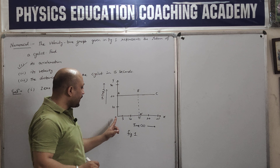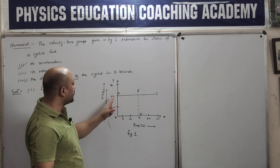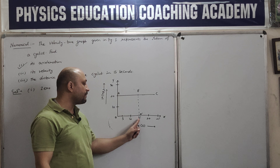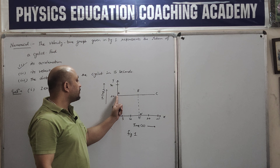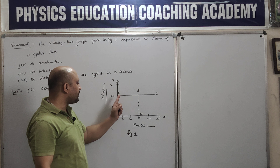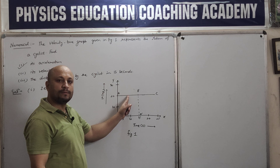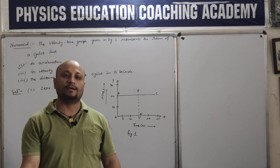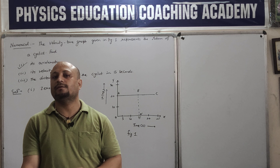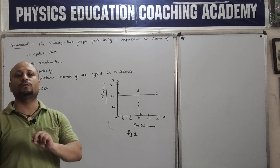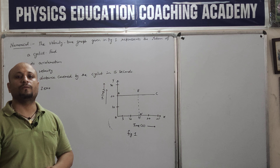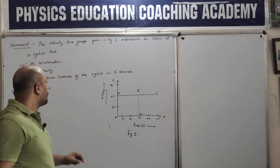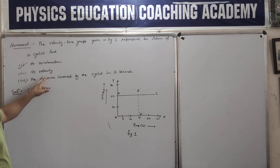Let me repeat: at time t = 0, the velocity was 20 meter per second. As time passed - at 5 seconds, 10 seconds, 15 seconds - the graph tells us the cyclist's velocity was 20 meter per second throughout. At 5 seconds: 20 m/s, at 10 seconds: 20 m/s, at 15 seconds: 20 m/s. This means there is no change in the velocity of the cyclist during these 15 seconds. Since there is no change in velocity, acceleration is 0. Because acceleration = change in velocity / time taken. So first answer: 0.